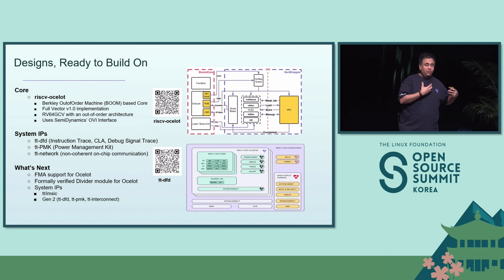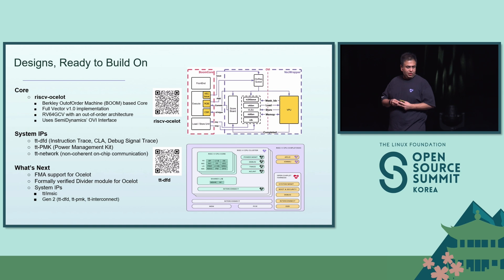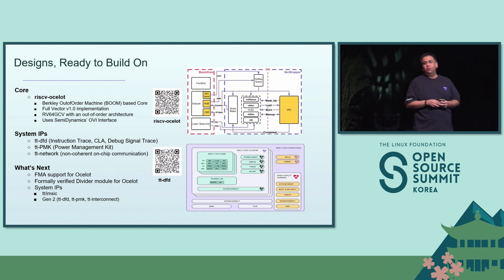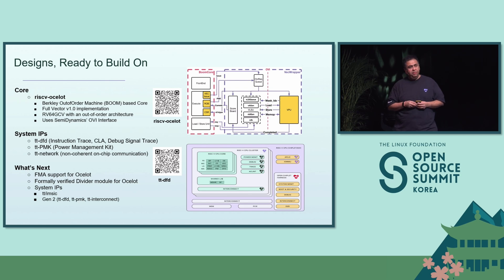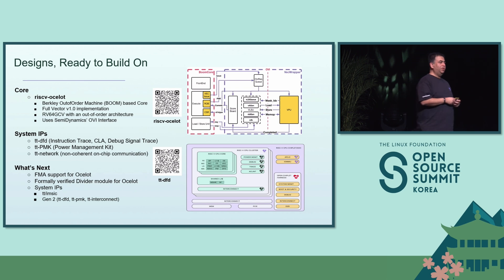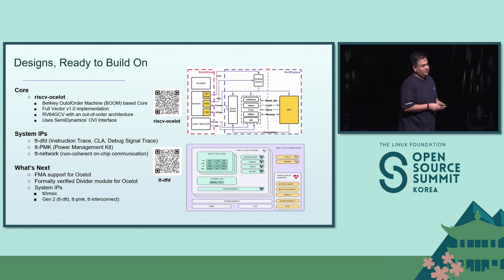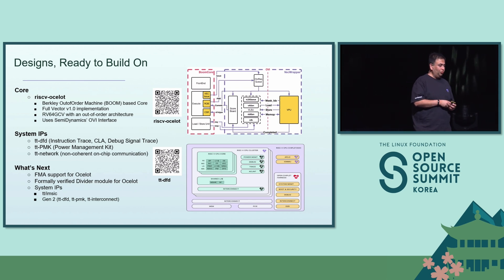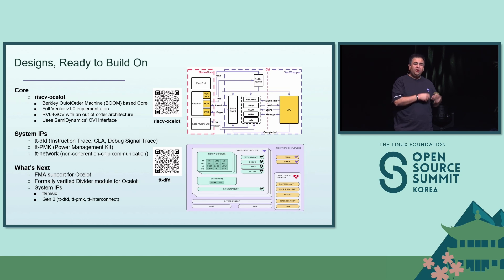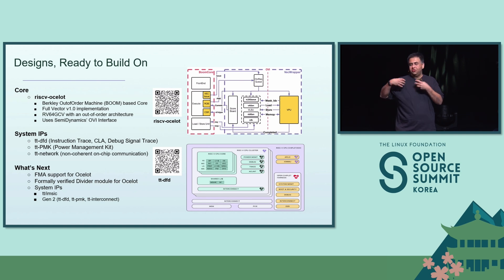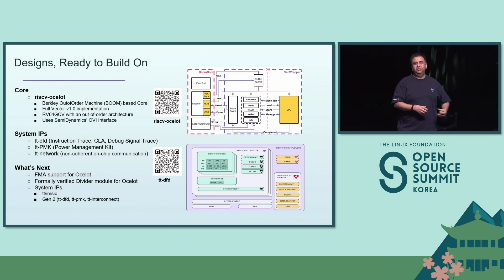The way we enable the RISC-V ecosystem is we release open source design. Ocelot is a CPU entirely based on the BOOM core that came out of Berkeley. It introduces a high-performance vector unit compliant with the RISC-V vector extensions, RVV 1.0. What we've realized is that for broader adoption of RISC-V, we need to give tools not just to us, but to many companies and developers that can use an entire solution for RISC-V.